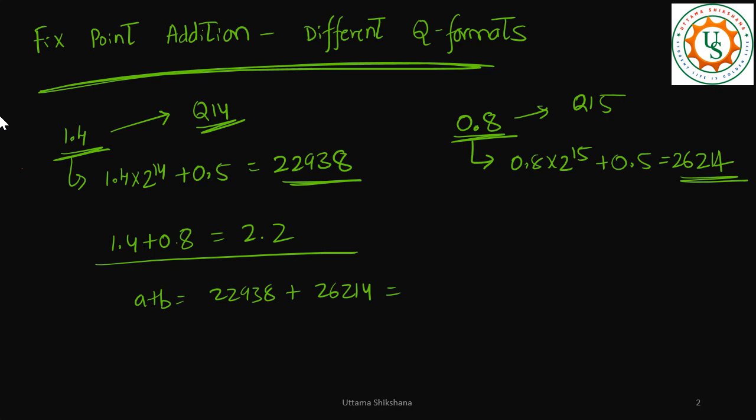When we were doing the multiplication of two different queue formats, we were just multiplying those two numbers and then we were trying to adjust them to fit into the required queue format by doing the right shifting by required number of bits. But whether the same thing is possible here or not, let us try to check.